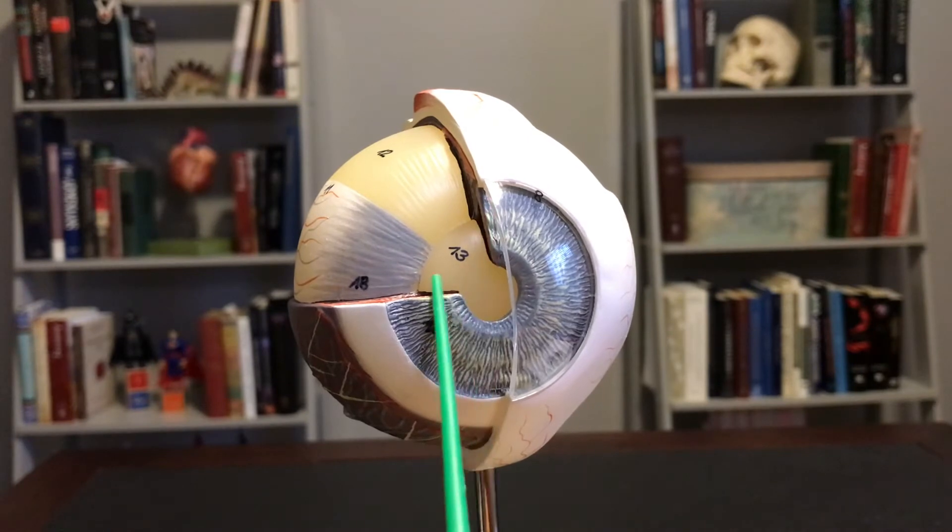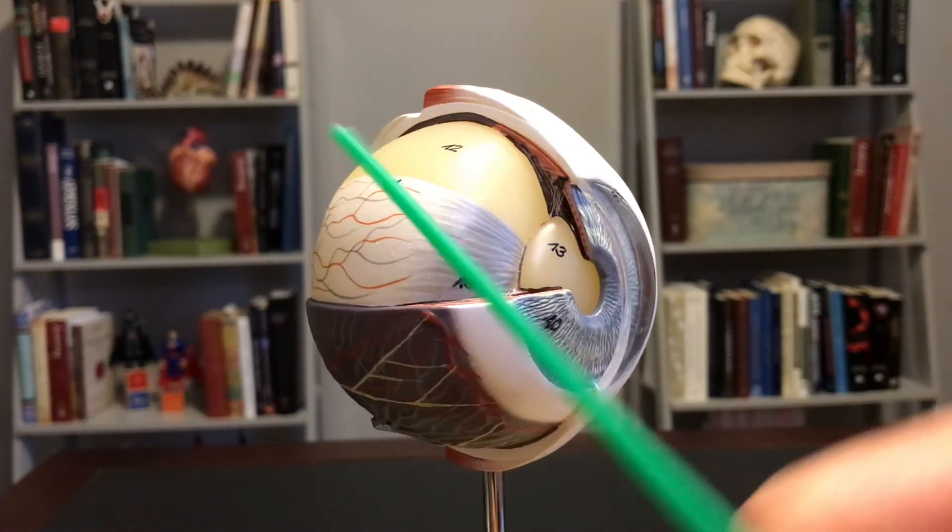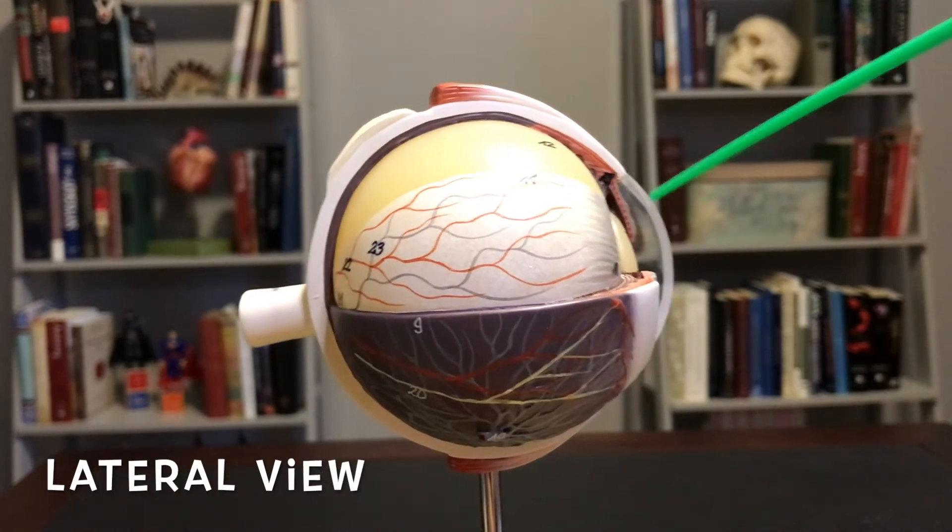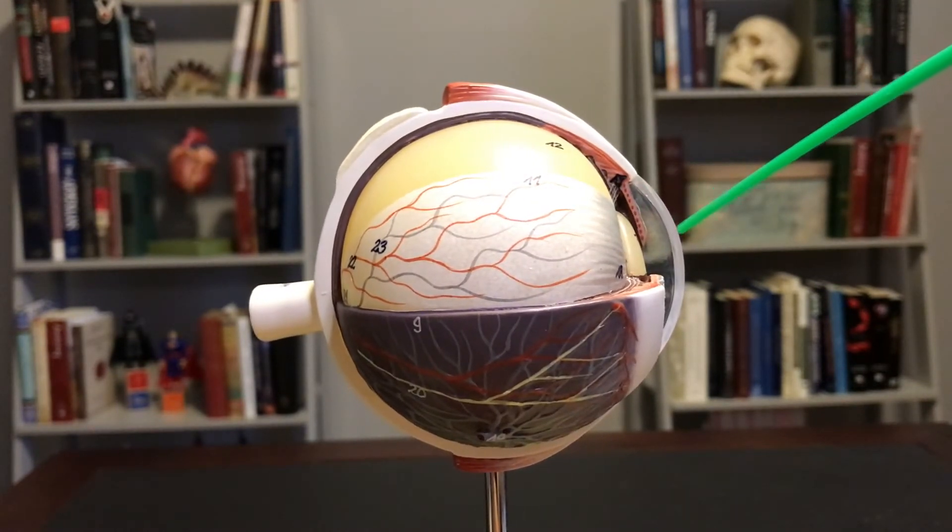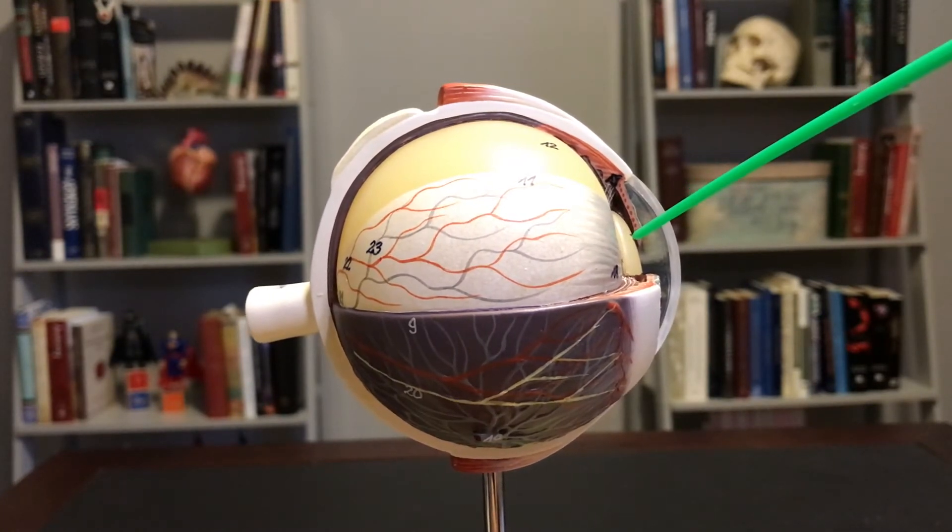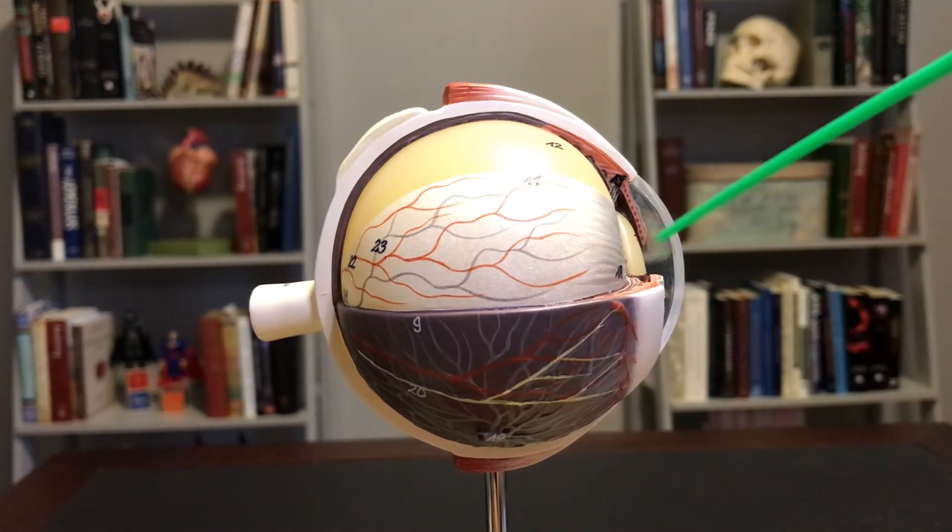Now, obviously, this has been sectioned off right here. So if we look at it from a slightly different angle, we can see this anterior segment. Anterior segment basically goes from the cornea to the lens. This is the lens that I'm touching right here. And within this region, we have a fluid called aqueous humor.